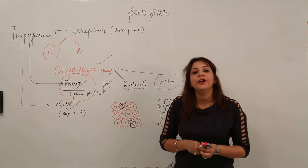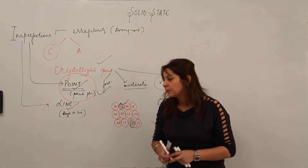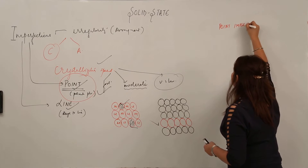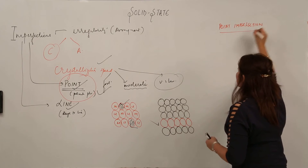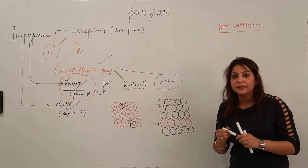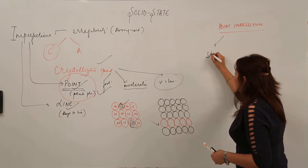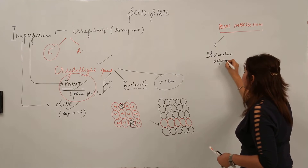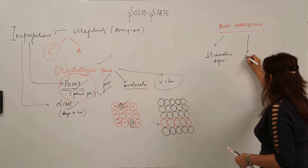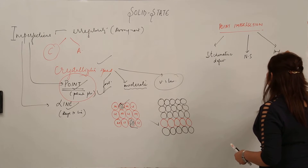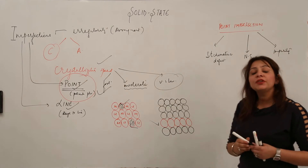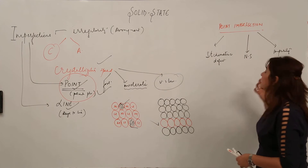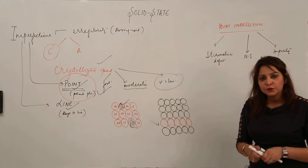In this chapter, our concern is only with point imperfection — where you get to see irregularity only at specific points. Point imperfections are further classified into three categories: stoichiometric defect, non-stoichiometric defect, and impurity defect.